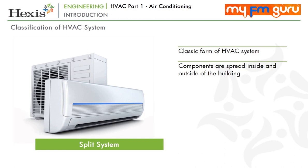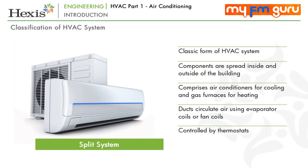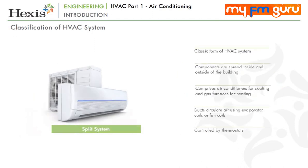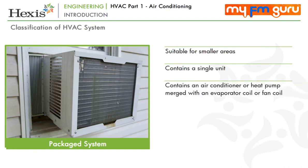Split systems are the most classic of the heating and air conditioning systems — systems where you have components both inside and outside the building. HVAC split systems will typically have air conditioners that cool refrigerant to create a chilling effect and gas furnaces to generate heat. Ducts circulate the air throughout the indoor area, aided by evaporator coils or fan coils. The systems can be controlled by thermostats throughout the facility. Packaged systems are a great option for areas that do not have the space to accommodate split systems. Unlike split systems, packaged systems involve only a single unit — an air conditioner or heat pump merged with an evaporator coil or fan coil — suited for heating or cooling a small space.